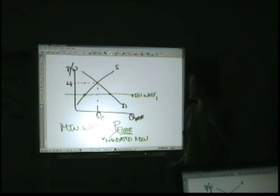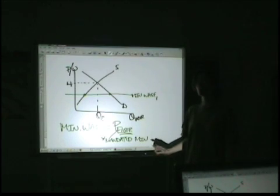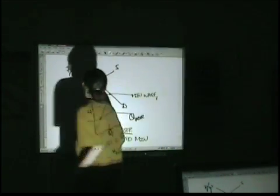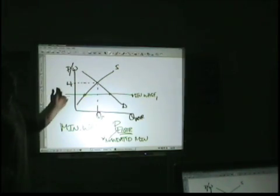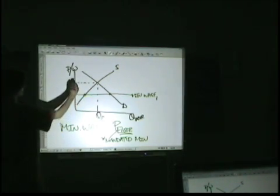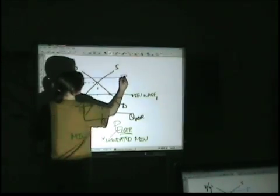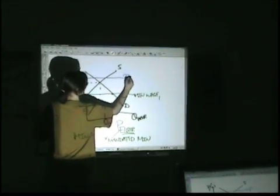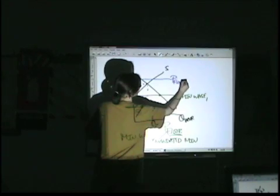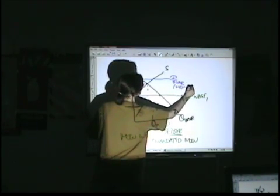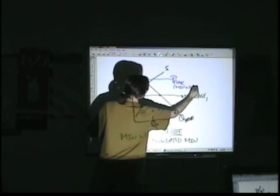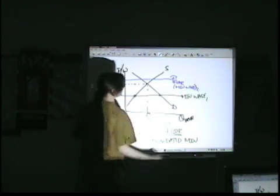If it's actually a binding price floor — one that is effective in the market — then to actually have an impact, it would have to be higher than equilibrium. We'll call this minimum wage two.